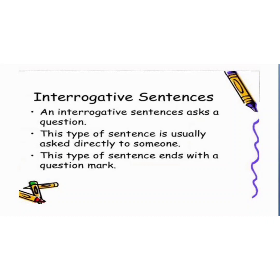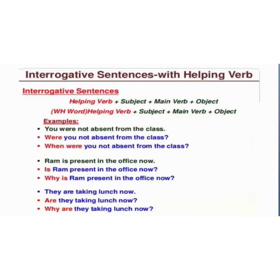Now we come to the second type of sentence — the interrogative sentence. An interrogative sentence asks a question. A question mark is used at the end of such sentences. This type of sentence is usually asked directly to someone. Any question is known as an interrogative sentence.